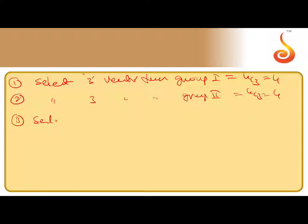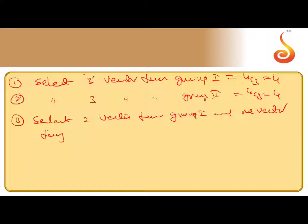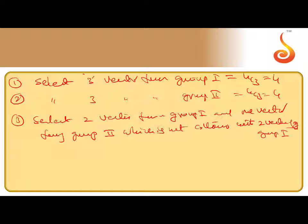Case 3: Select two vectors from Group 1, then one vector from Group 2 which is not collinear with the two chosen vectors from Group 1. For example, if you take A and B from Group 1, you can take -C or -D from Group 2. This can be done in 4C2 × 2C1 ways, which is 6 × 2 = 12.